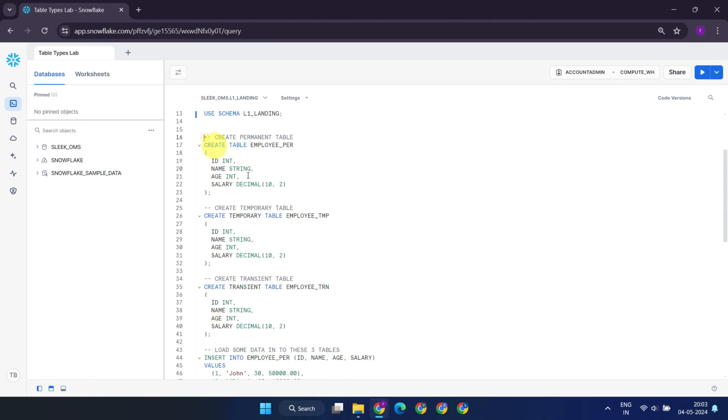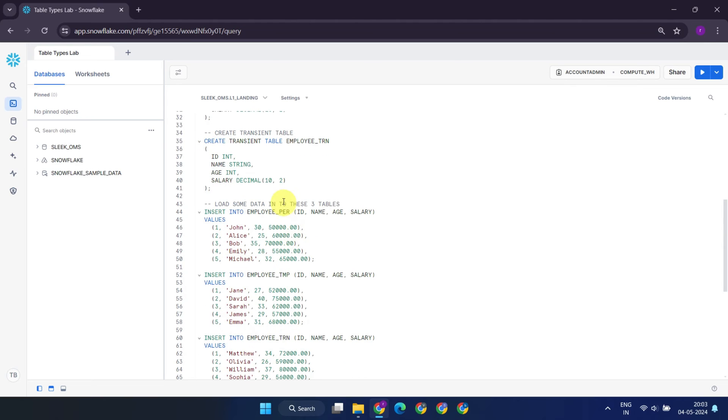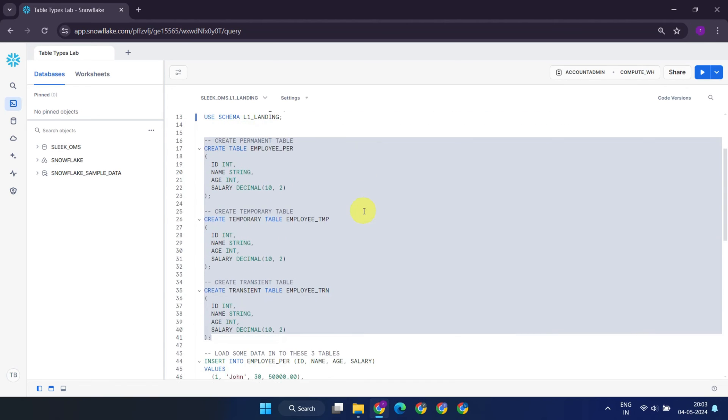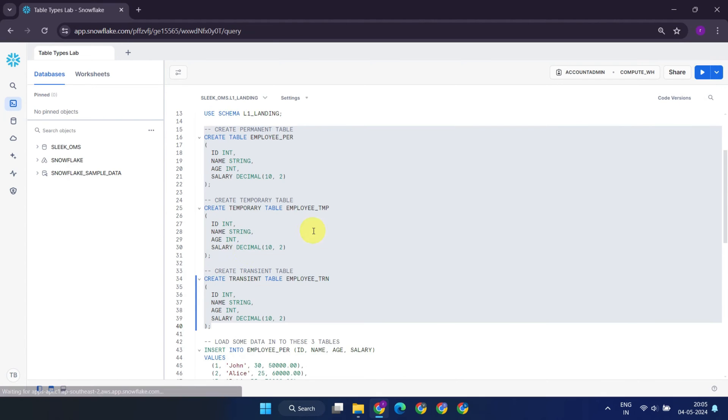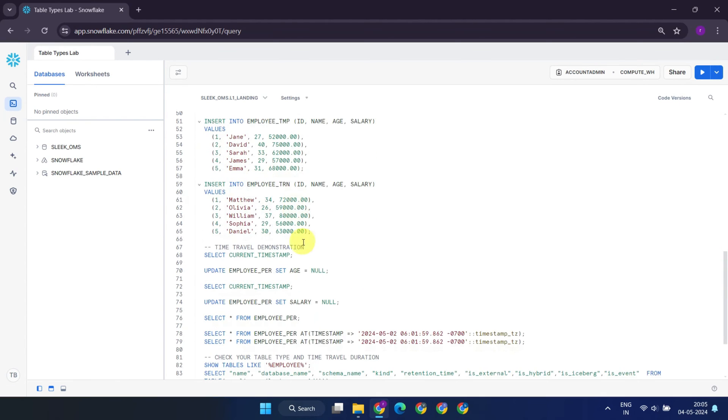Over here, I've created three tables, each representing one of the types we discussed previously. The first is a permanent table, followed by a temporary table, and finally, a transient table. Next, we'll proceed to populate these tables with some sort of data.